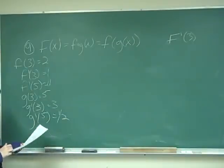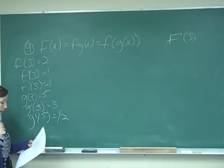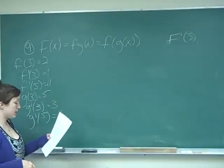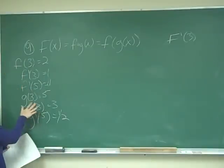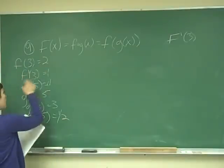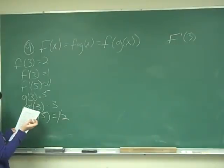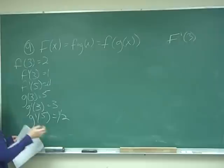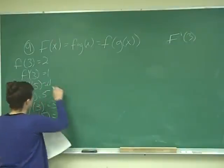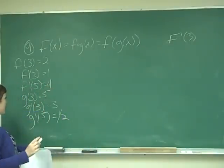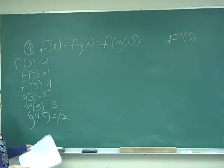This is problem number 9. And it says, given the functions f of x and g of x, such that, and it lists a whole bunch of conditions. f of 3 is 2, f prime of 3 equals 1, f prime of 5 equals 4, g of 3 equals 5, g prime of 3 equals 3, and g prime of 5 equals 1 half.